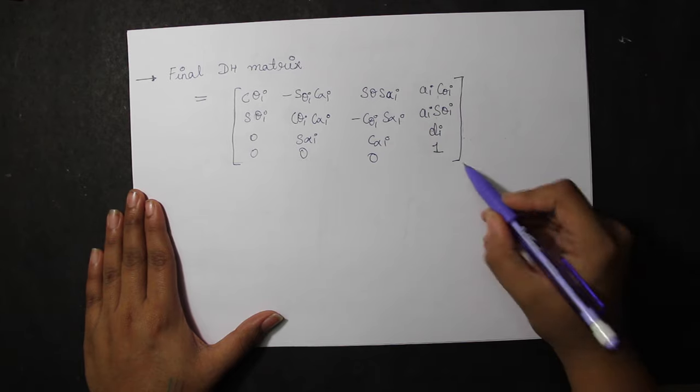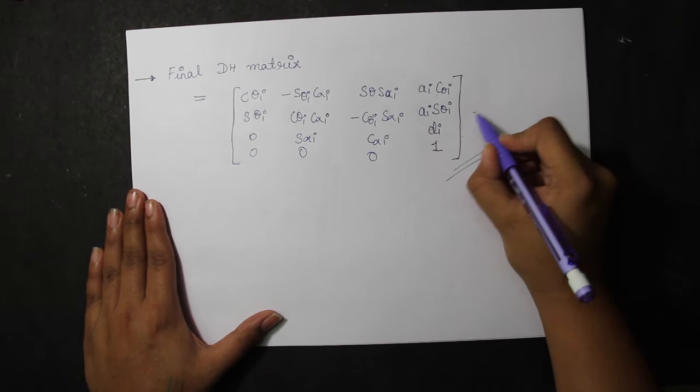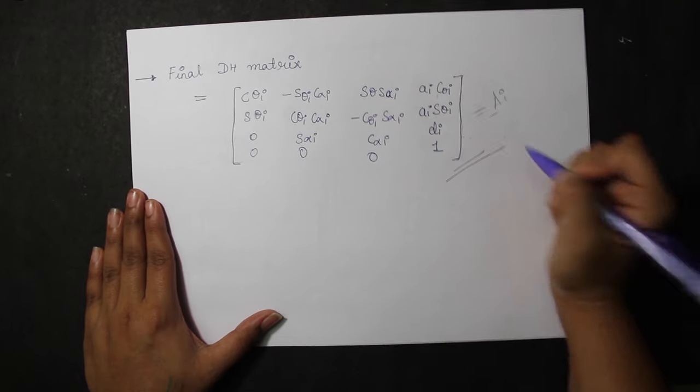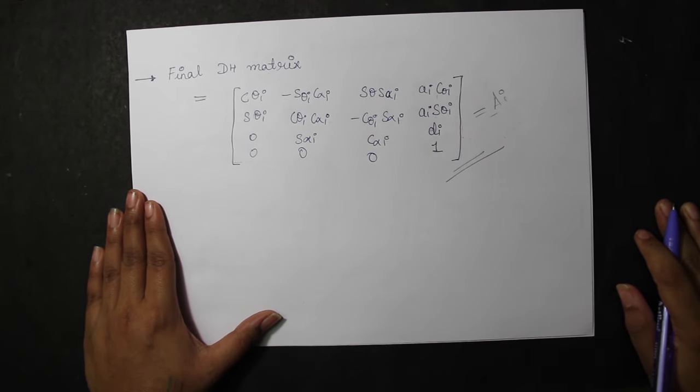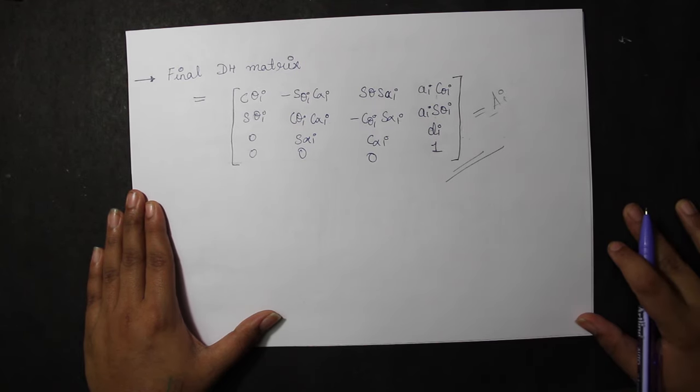This final matrix is known as the homogeneous transformation AI, and it is also known as the DH matrix. When you multiply it, you will get something like this. I would recommend that you go ahead and solve it on your own to get a better insight into it.